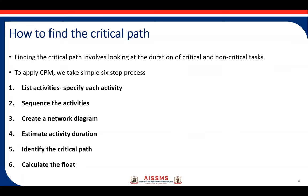To find the critical path using CPM, we follow a simple six-step process. The first step is to list the activities — we use a Work Breakdown Structure (WBS) to list out all activities. The second step is to sequence the activities: based on the WBS, we determine which tasks are dependent on one another and sequence them according to their dependencies.